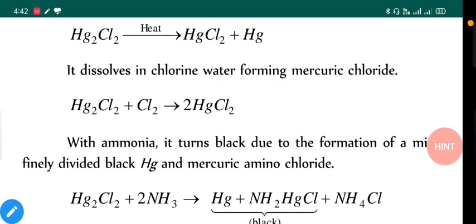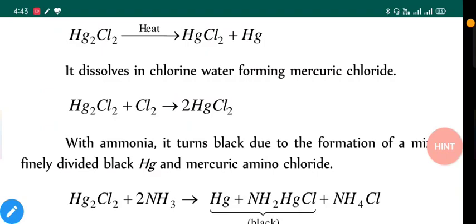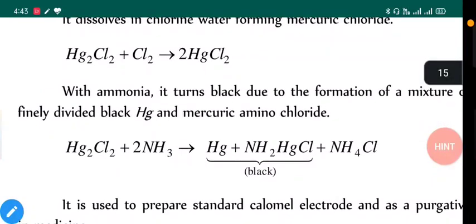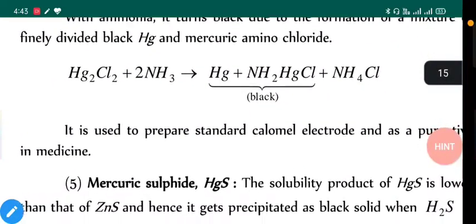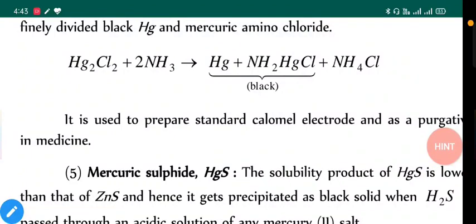With ammonia it turns black due to the formation of mixture of finely divided black Hg and mercury amino chloride. Hg₂Cl₂ with NH₃ gives Hg·NH₂HgCl, which is black in color, and NH₄Cl.